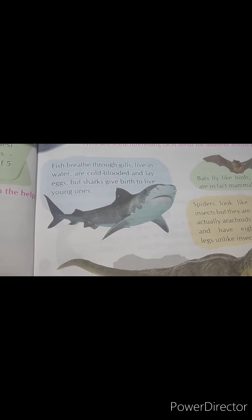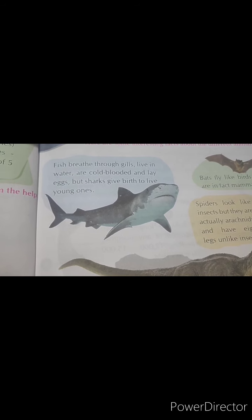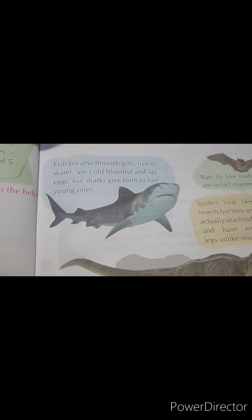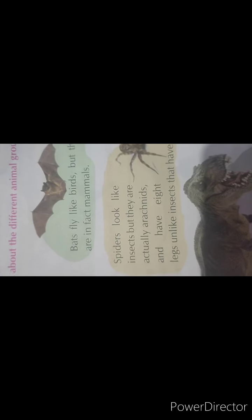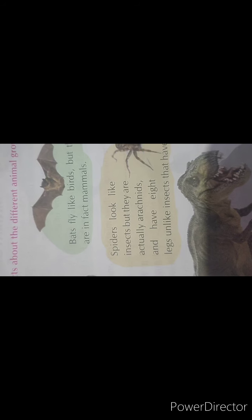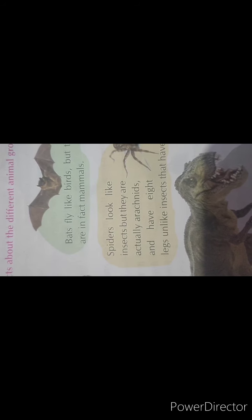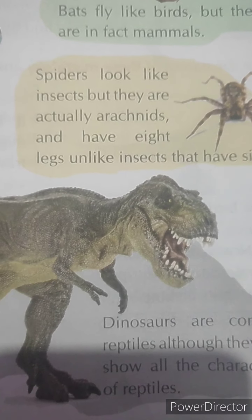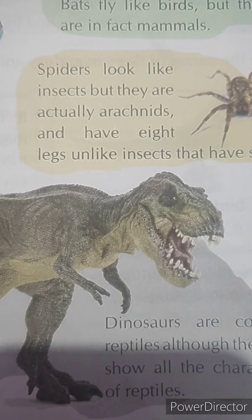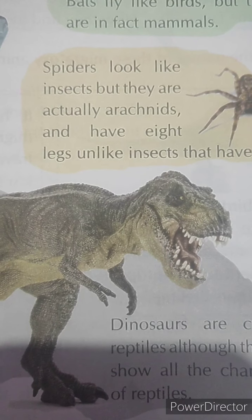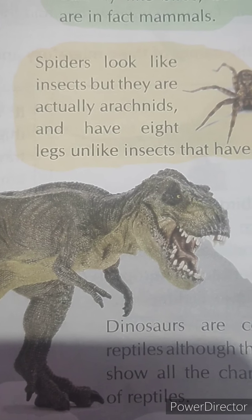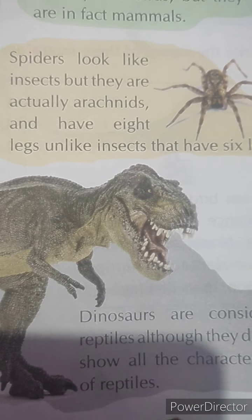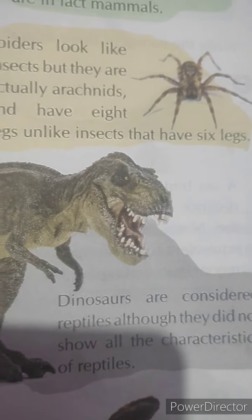But sharks give birth to live young ones. Bats fly like birds, but they are in fact mammals.